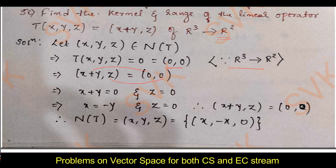From x + y = 0 and z = 0, I get x = −y and z = 0. Substituting x = −y: −y + y = 0, which is satisfied. Therefore the kernel of T is {(x, −x, 0)} — that is, the kernel consists of vectors of the form (x, −x, 0). This is how we find the kernel of T for any such problem.